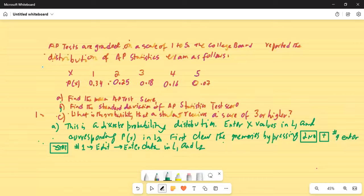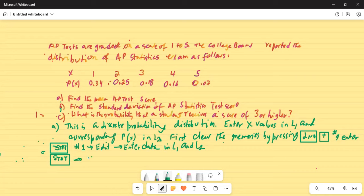Now we will press stat button again. So after entering the data, press the stat button again. The next thing we will do is again stat button and then highlight CALC on the top row. Then number one, which is one-var stats.